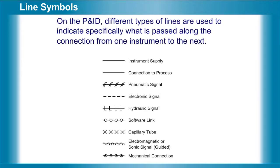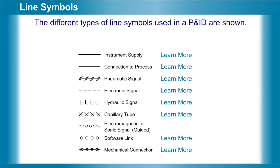On the P&ID, different types of lines are used to indicate specifically what is passed along the connection from one instrument to the next. Let's examine the different types of lines used on a P&ID diagram and the types of connections they represent.